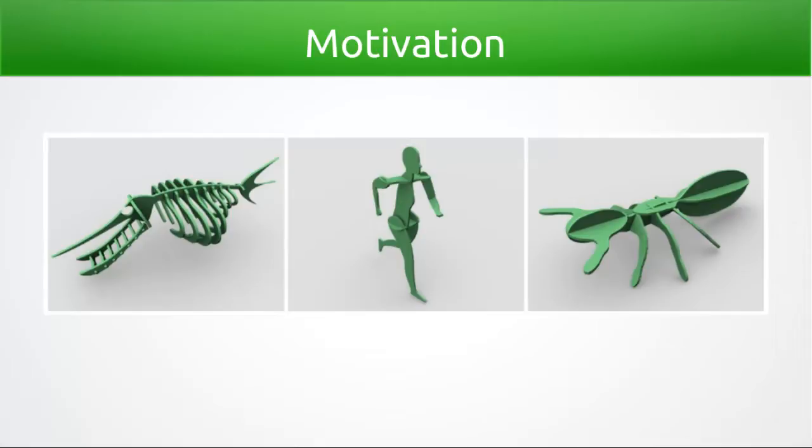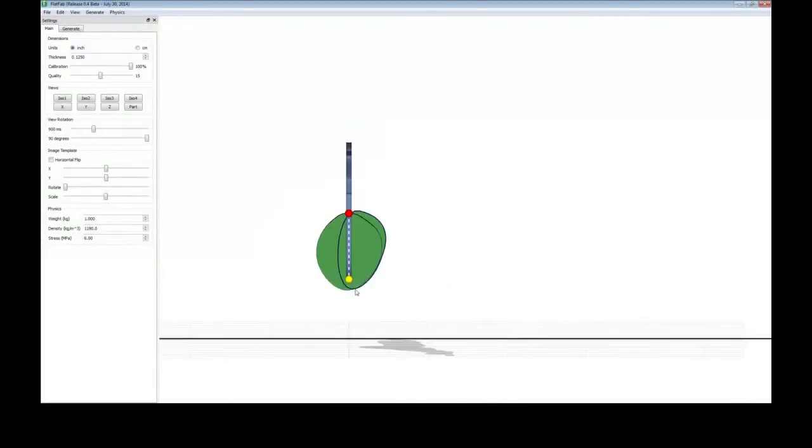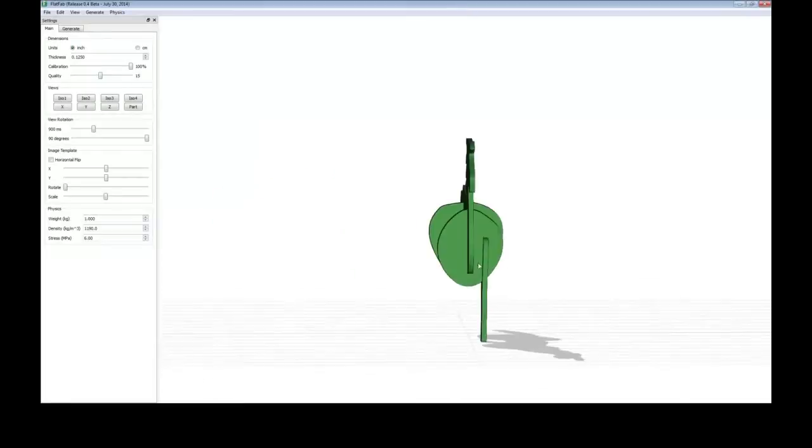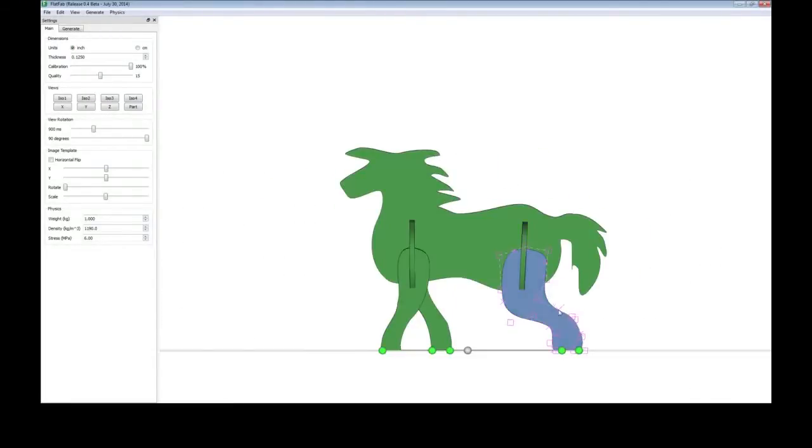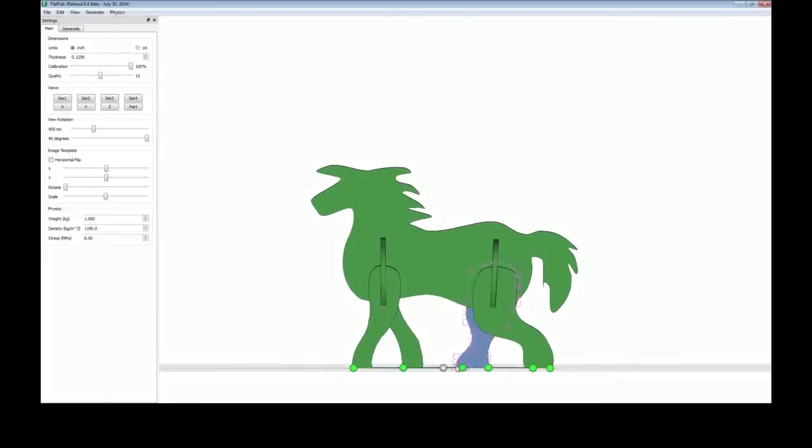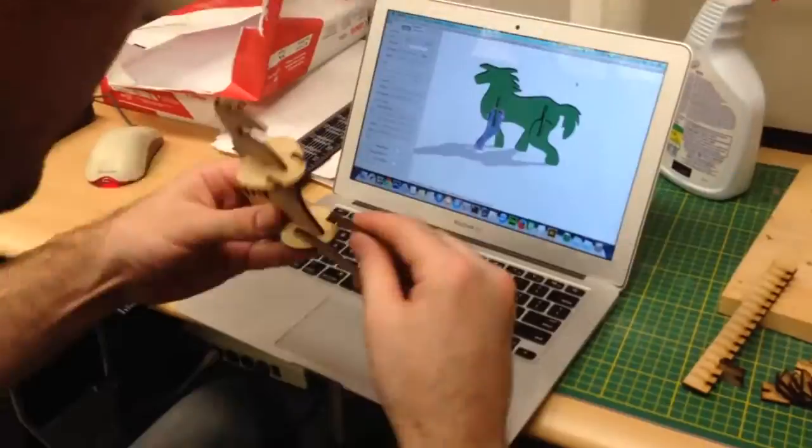Our work presented today addresses the need for a system to interactively create planar section structures. The FlatFitFab system contains a novel interaction method which is consistent between workflows, numerous operations for planar section modeling, real-time physical feedback, and fabrication tests to ensure that models, once physically made, are suitable as real objects.